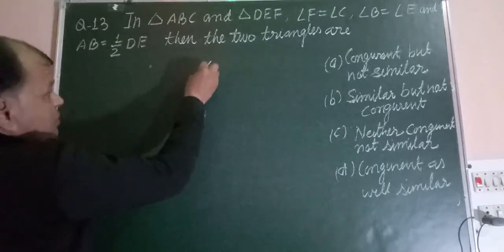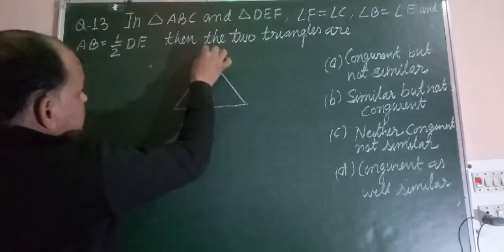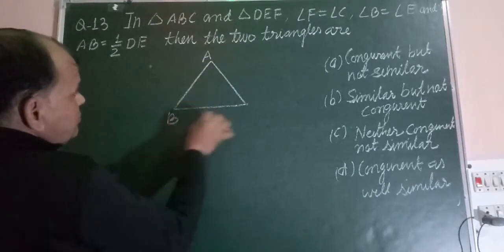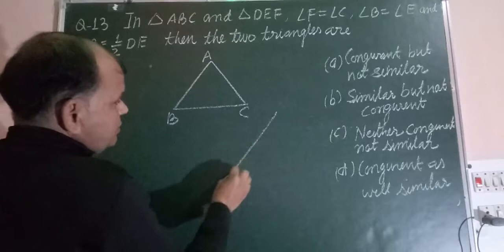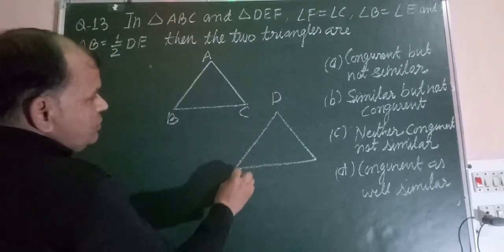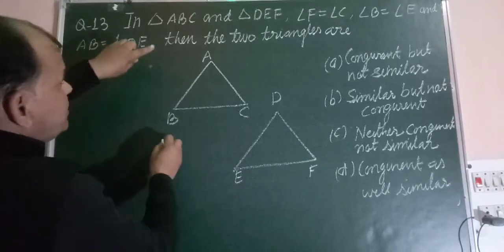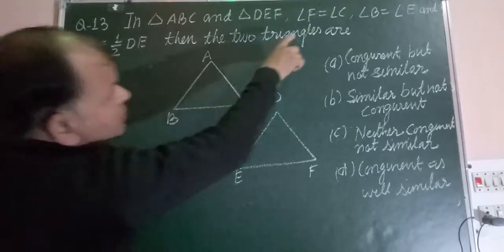So first we make the triangle. This is ABC and this is DEF, D, E, F.